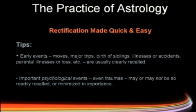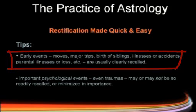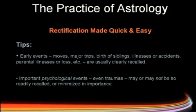A couple of tips. Early events such as moves, major trips, the birth of siblings, illnesses, accidents, parental illnesses or loss — usually those are pretty clearly recalled. Important psychological events, including traumas, may or may not be so readily recalled, or they may be minimized in importance.